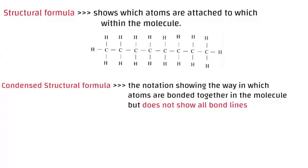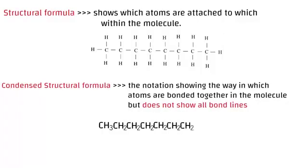Remember the word condensed. Let's look at our structural formula to make a condensed version. Starting with carbon number 1 on the left-hand side, which has 3 hydrogen atoms — that gives us CH₃. Carbon number 2 has 2 hydrogen atoms — CH₂. The third and fourth also each have 2 H atoms — CH₂. We continue like that to the 8th carbon, which has 3 H atoms, giving us CH₃ again. So this is the condensed structural formula — it does not show bond lines, whereas the structural formula does.